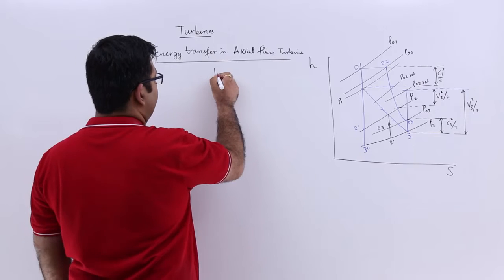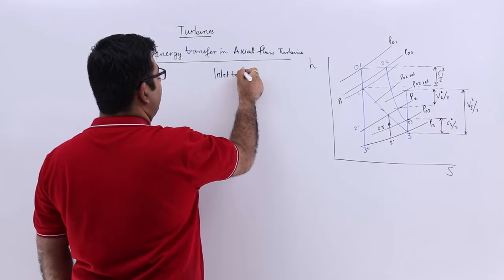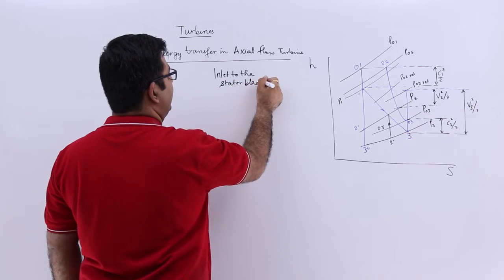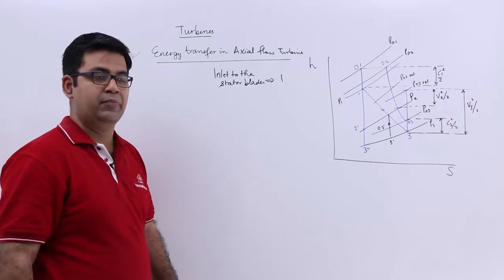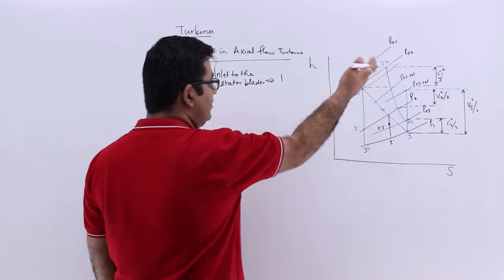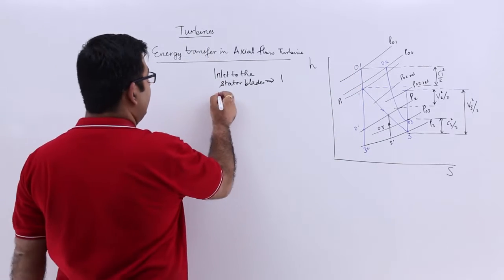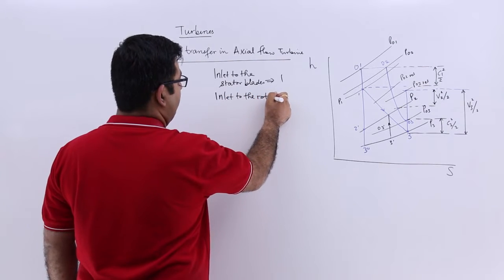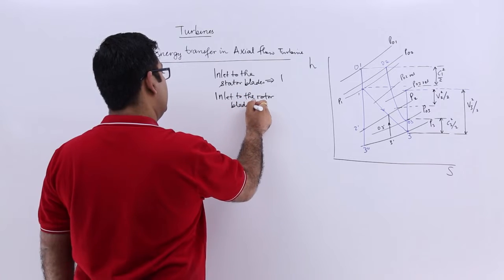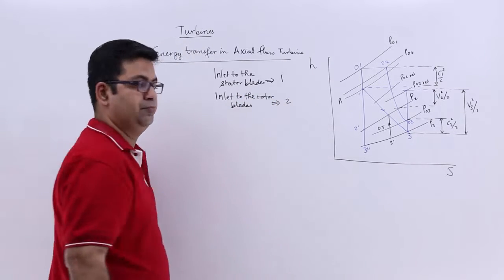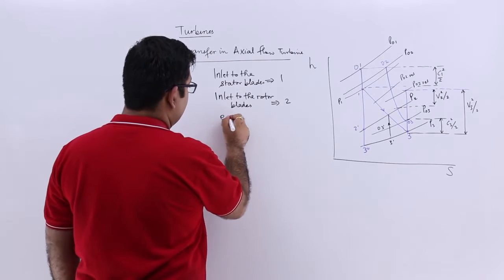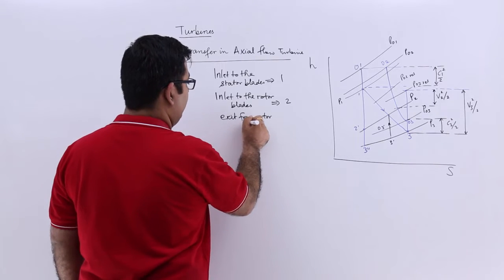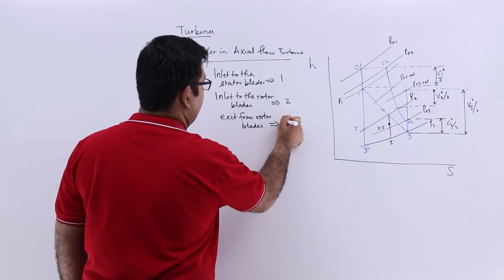The inlet to the stator blades, all those states are given as 1. The inlet to the rotor blades is designated as 2. The exit from the rotor blades is designated as 3.